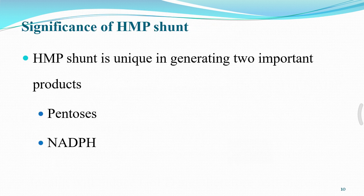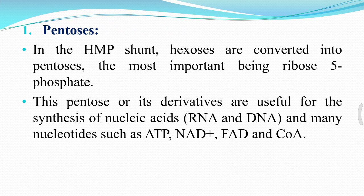The HMP shunt pathway generates two important products: pentoses and NADPH. Regarding pentoses: in the HMP shunt, hexoses are converted into pentoses, the most important being ribose 5-phosphate. These pentoses are used for the synthesis of nucleic acids — RNA and DNA — and many nucleotides such as ATP, NAD+, FAD, and coenzyme A.